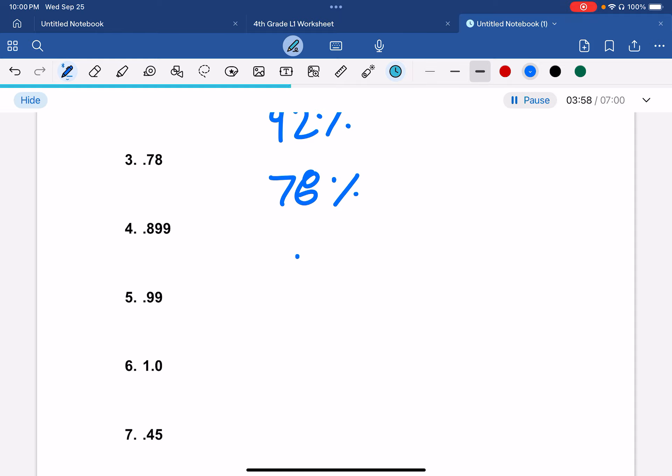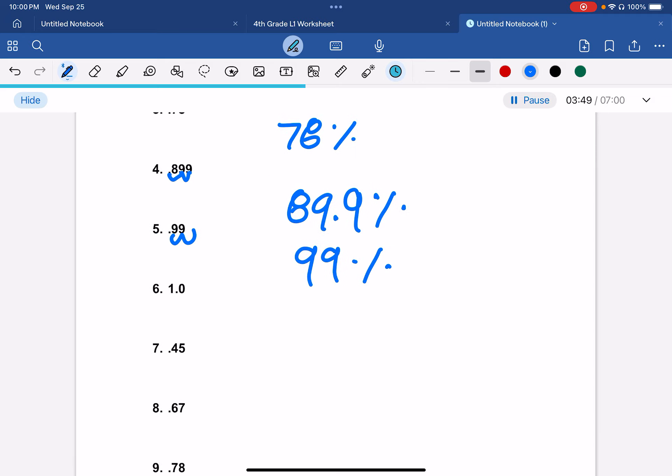No, wait. This would be 89.9% because you're moving 2 decimals. So this would be 99%. This would be 100% because you're moving 2 decimals.